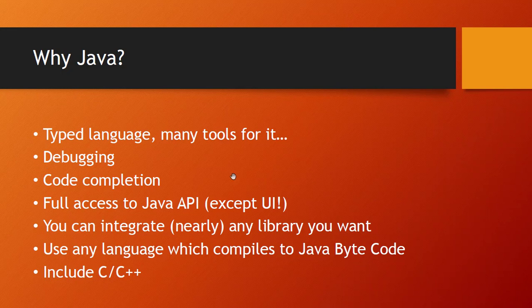You also get code completion, which improves development massively, and you have full access to the Java API. You can integrate nearly any library you want — for example, document index search engines or whatever you need. You can also use any language that compiles to Java bytecode. For example, you could use Groovy, and via the JNR interface you can include C or C++ code, which is helpful if you want to address specific hardware.